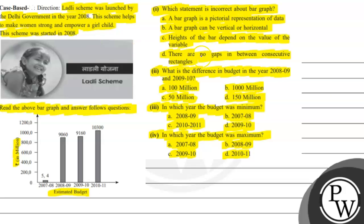The answer to the first question is Option C. The height depends on the variable — but actually the height depends on the frequency. So Option C is the incorrect statement.